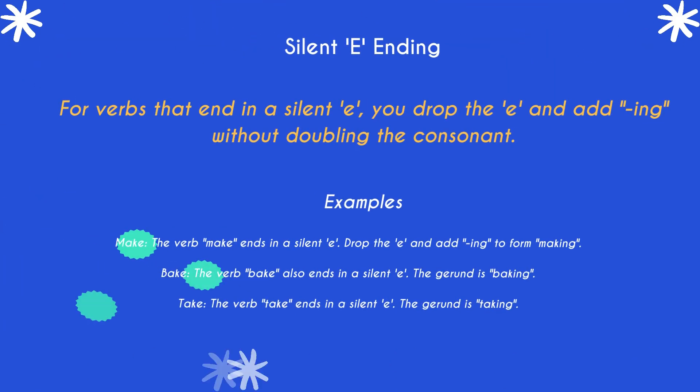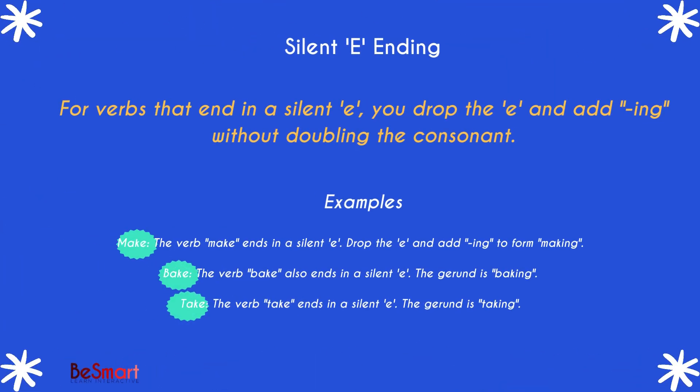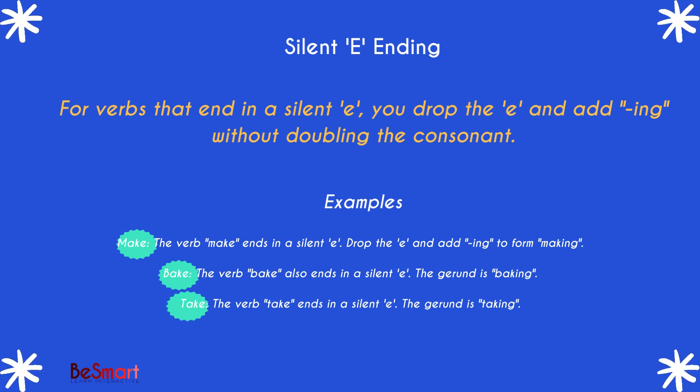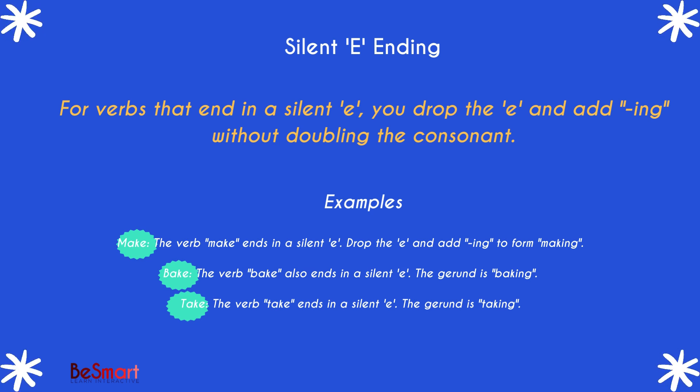The fourth rule deals with verbs that end in a silent e. For these verbs, you drop the e and add -ing without doubling the consonant. For example, make becomes making, bake becomes baking, and take becomes taking. The silent e is removed before adding -ing.